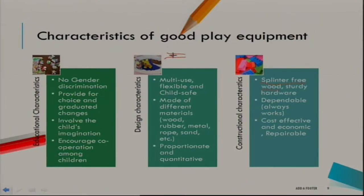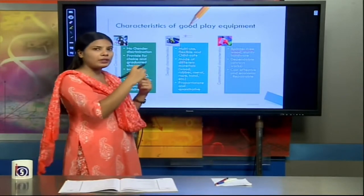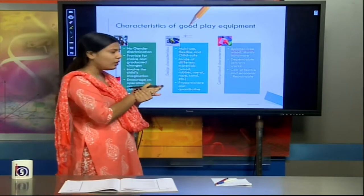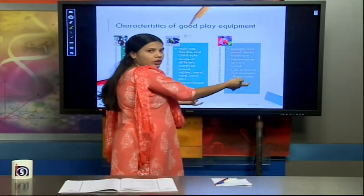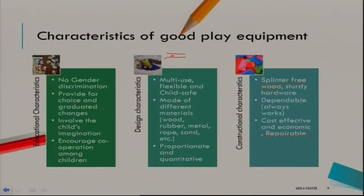First of all, the wood piece should be splinter-free if we are using wood. And it should be sturdy — long-lasting and not break easily. The toy needs to be good in strength. Then cost-effective and economic: cost-effective means we need it in a particular quantity, at least two to three pieces of a toy. Economic refers to the financial funding of the play center. And repairable — if a toy breaks, it can be repaired easily without buying a new one altogether. So those are the three characteristics of good play equipment.